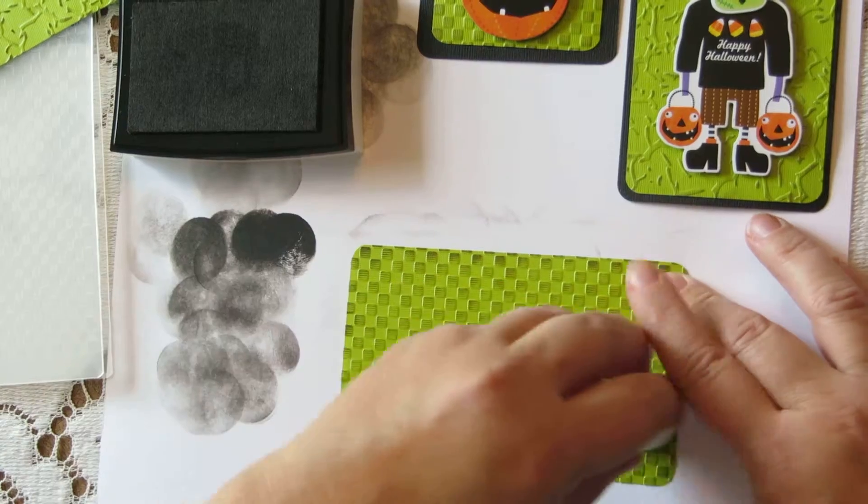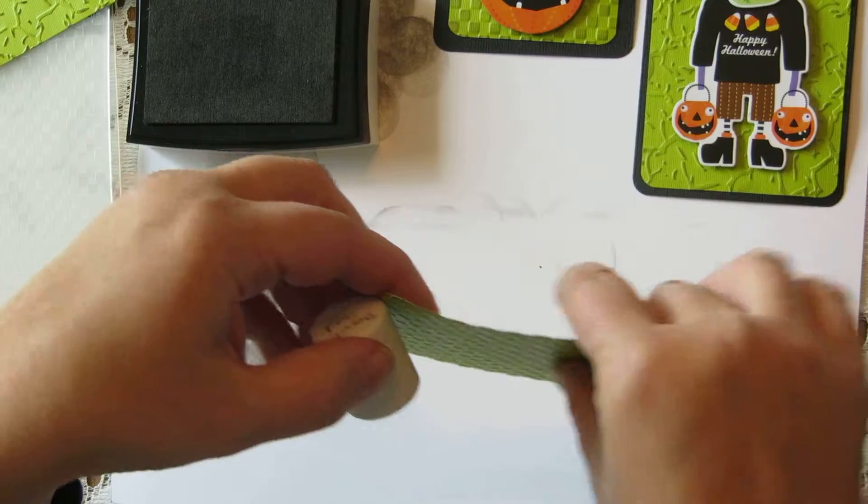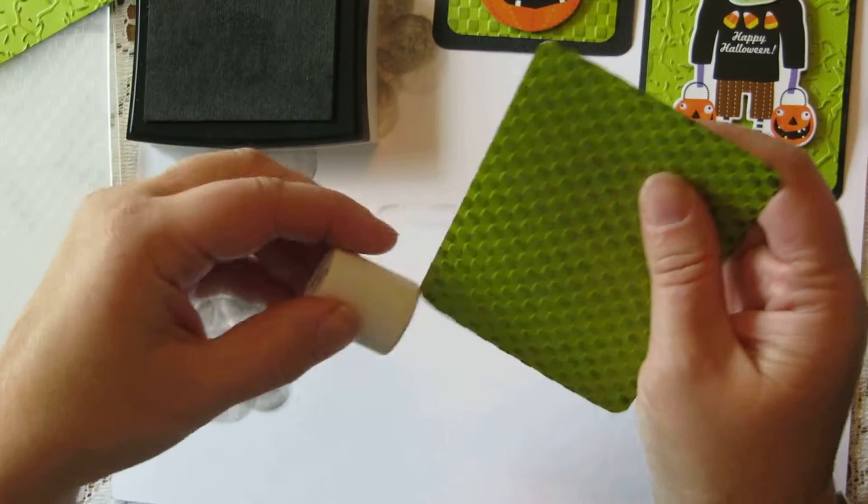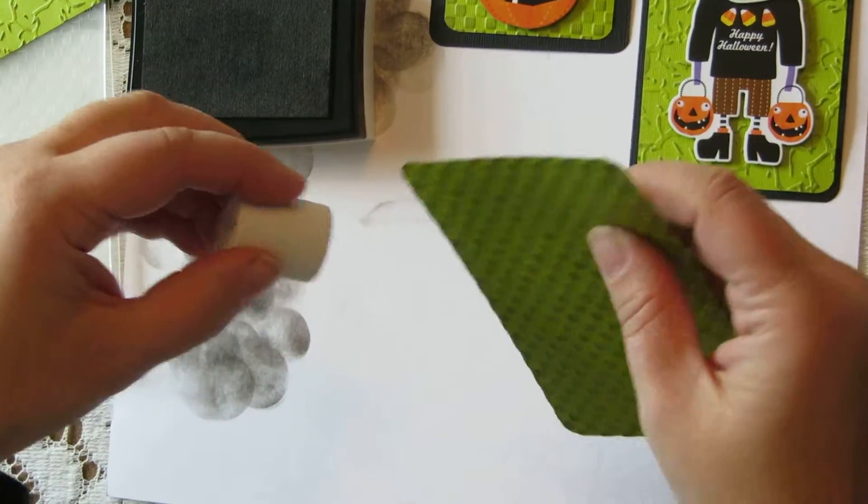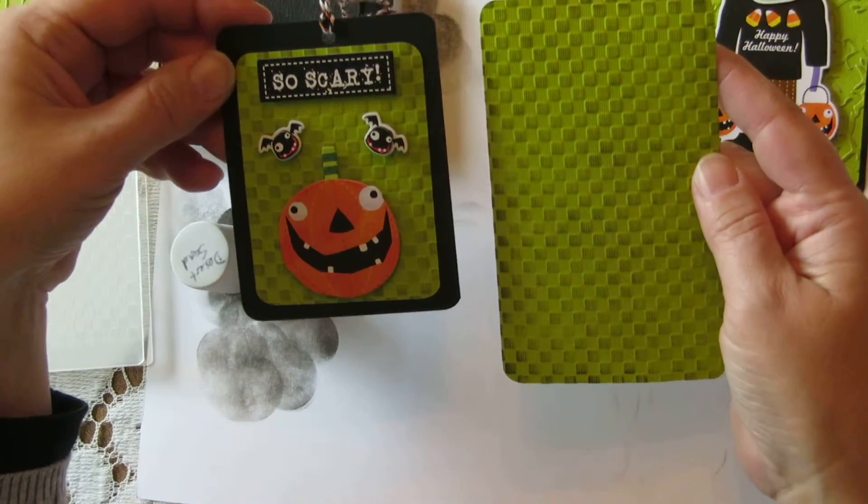Like I said, I'm using a contrasting ink today but you can absolutely use a complementary ink for a more subtle design. Again, across the edges. And that's exactly the technique I used to produce this background.